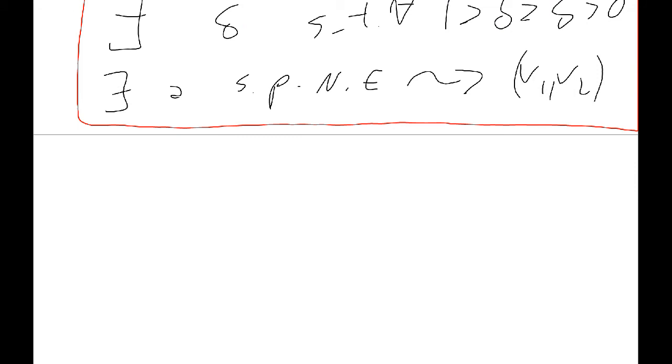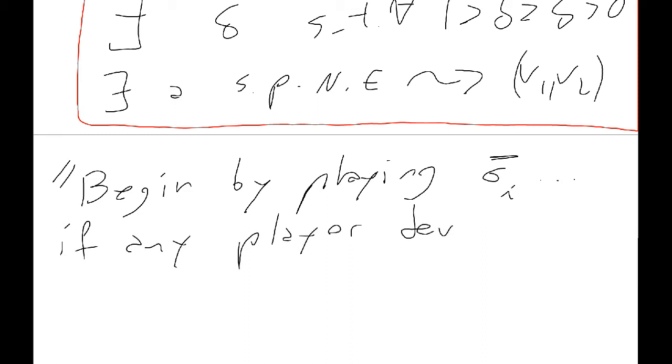And we consider the strategy, begin by playing sigma i bar. Remember, this was a strategy that gave us the rationally, individually rational payoffs. And as long as everyone plays that carry on. If any player deviates, use sigma i star, so the Nash equilibria, sorry, the stage Nash strategy for all future stages.